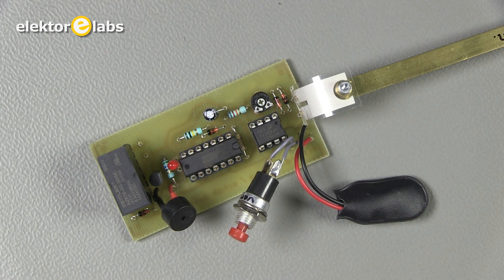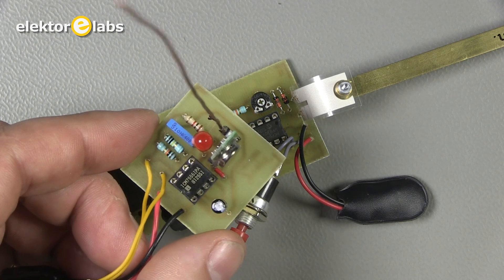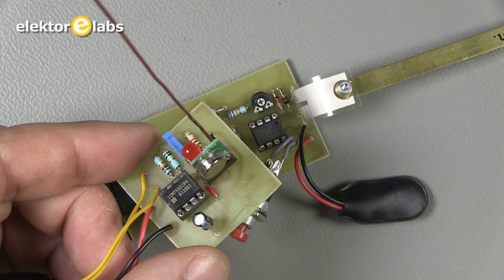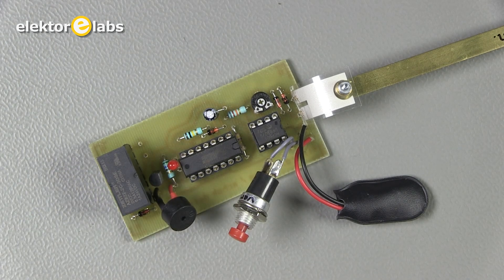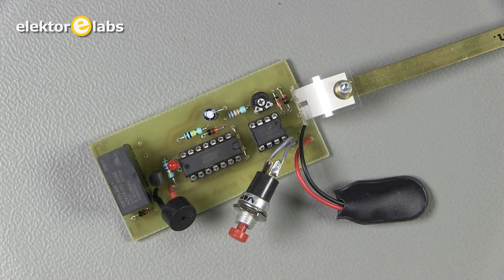A small 433 transmitter could also be connected to the relay output for wireless transmission of the detector signal to a remote location. More about that later.